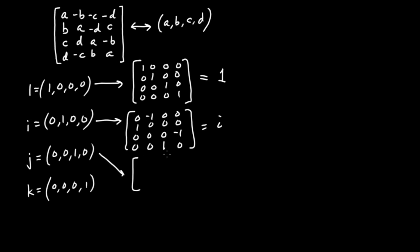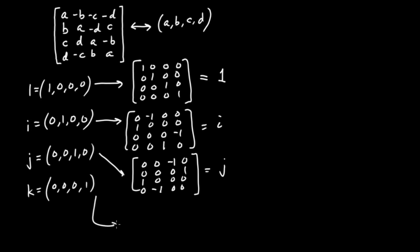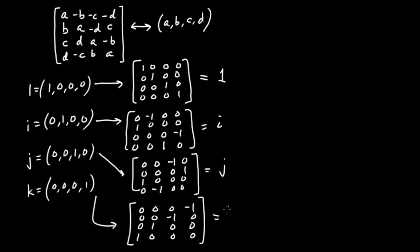Now let me write out j: 0, 0, minus 1, 0 / 0, 0, 0, 1 / 1, 0, 0, 0 / 0, minus 1, 0, 0. There is your quaternionic j. And finally, k — with D equals 1 along the anti-diagonal — it's going to be: 0, 0, 0, minus 1 / 0, 0, 1, 0 / 0, minus 1, 0, 0 / 1, 0, 0, 0. And there's your quaternionic k.